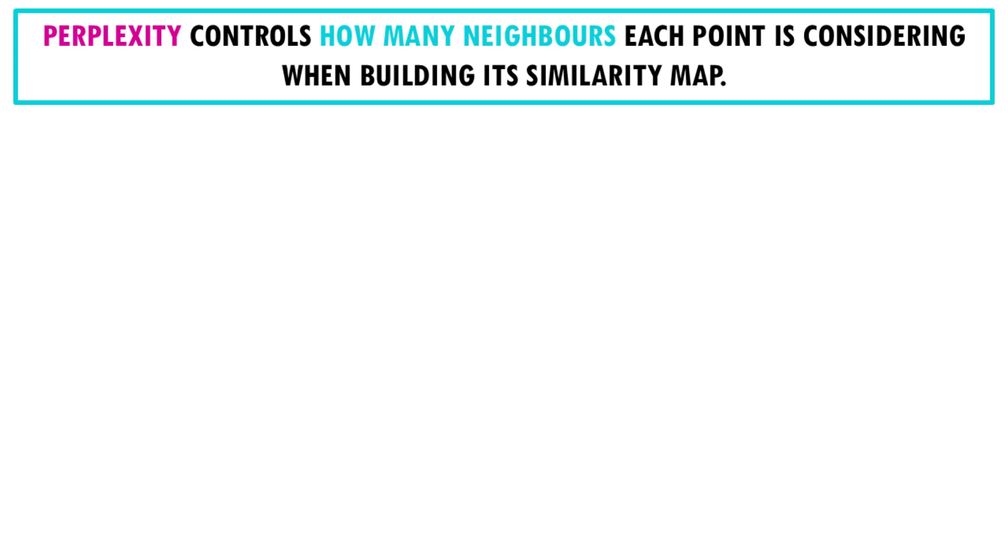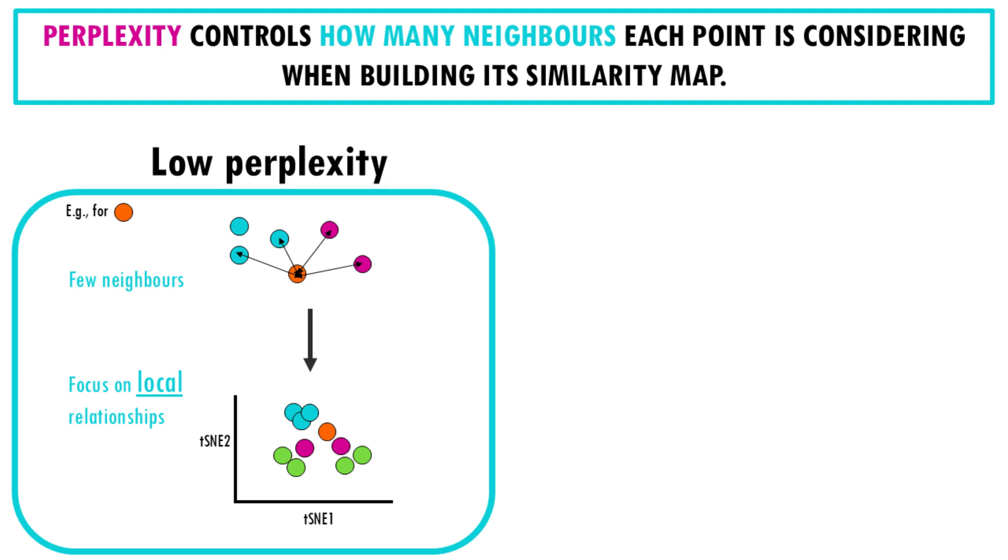When we set perplexity to a low value, we only consider a few neighbors when checking similarity, so the algorithm focuses more on local relationships. This means it will be sensitive to small differences between cells and will try to preserve tight clusters of cells that have very similar gene expression profiles.